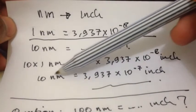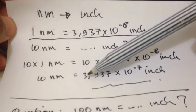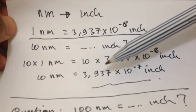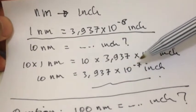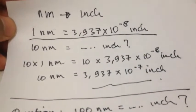And then, 10 nanometer is equal to 3.937 × 10^-8 inch. And that's the answer.